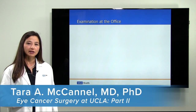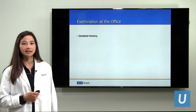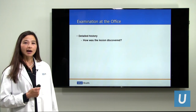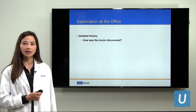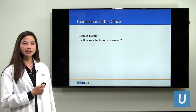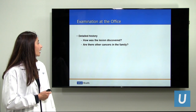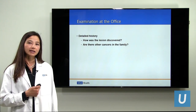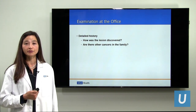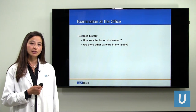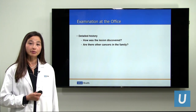When a person comes into the office for examination with a possible melanoma, it is very important to take a detailed history. How was it discovered — by photograph, or by a sensation of flickering lights? Are there no symptoms? These are important clues to help reach the correct answer. Are there other cancers in the family? Some patients with melanoma may have a higher prevalence of cancer in their family, and the more we understand about cancers, the more it seems there may be a hereditary component to susceptibility.